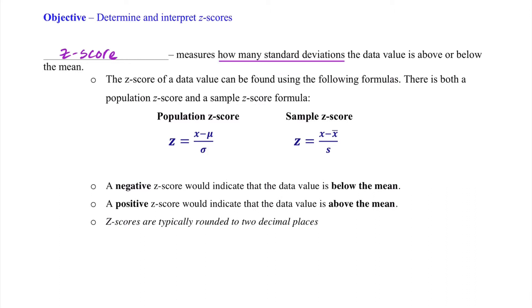Notice that the z-score formula for a population and a sample are very similar — just the notation or technicality changes when working with population data or sample data. We need to know that a negative z-score indicates the data value is below the mean, while a positive z-score indicates the data value is above the mean. Note that z-scores are typically rounded to two decimal places.